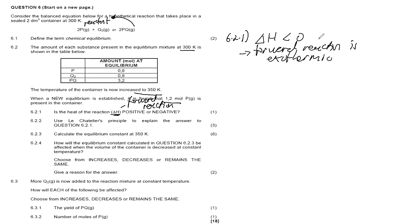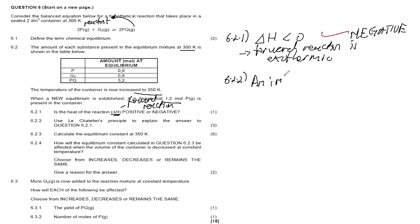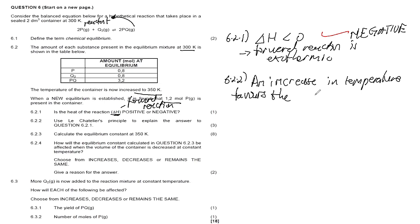For one mark we simply state: ΔH is less than zero. Then 6.2.2 asks us to explain using Le Chatelier's principle. So the answer is negative. Step one: an increase in temperature — because they increased from 300 K to 350 K — favors the endothermic reaction.